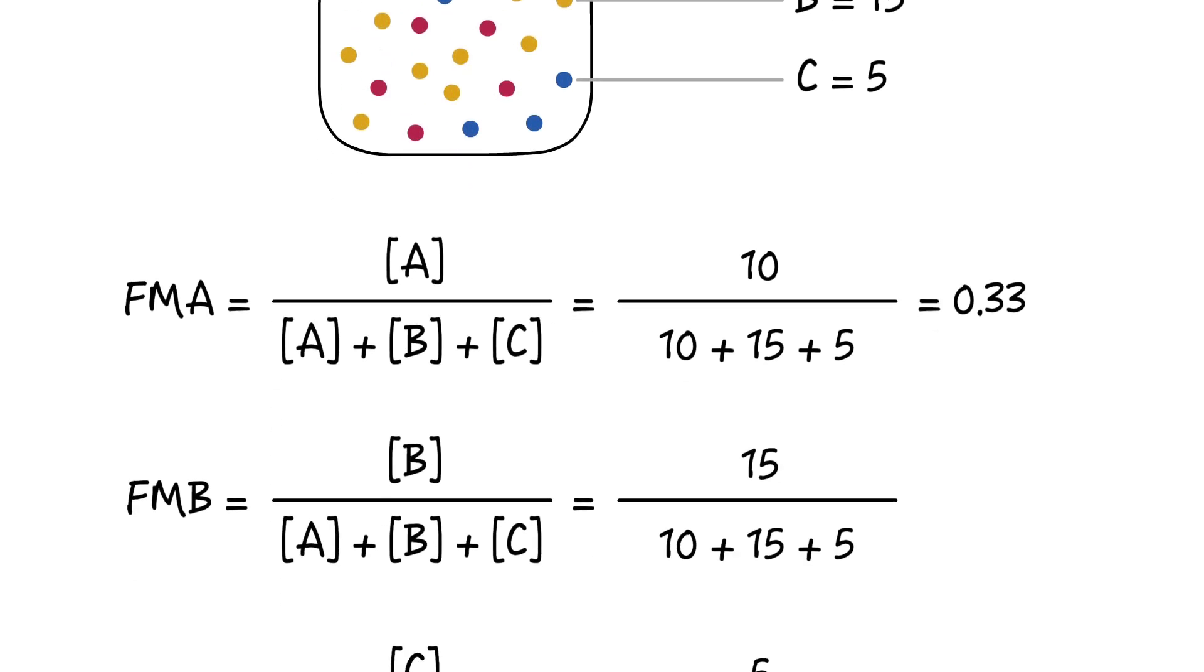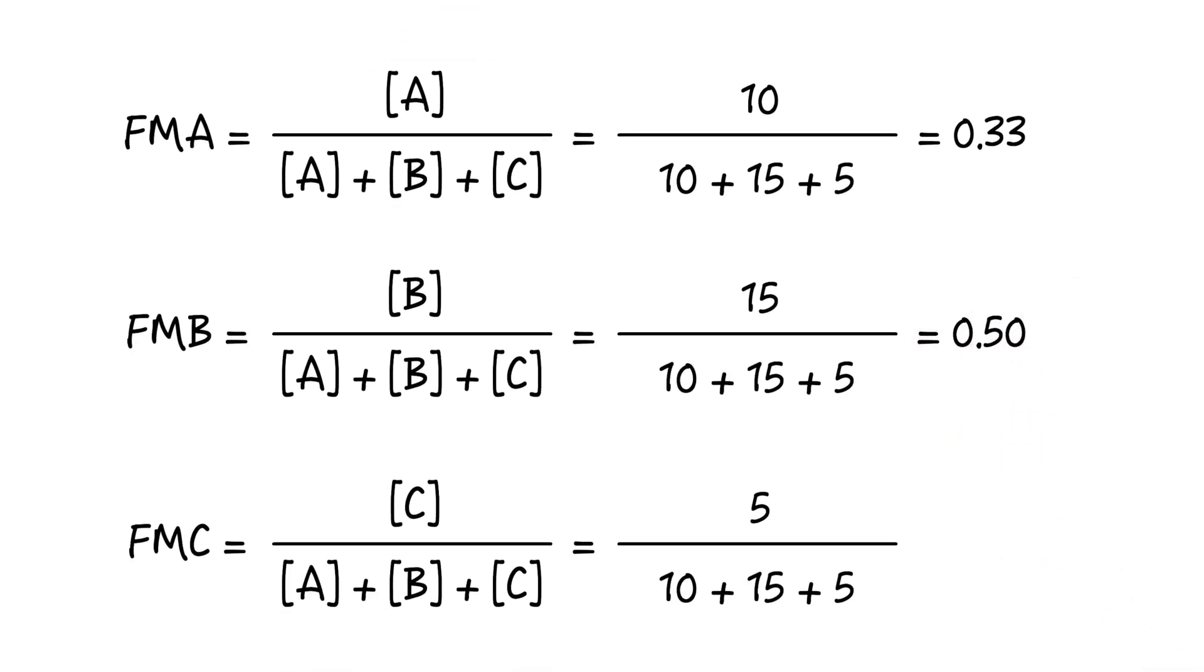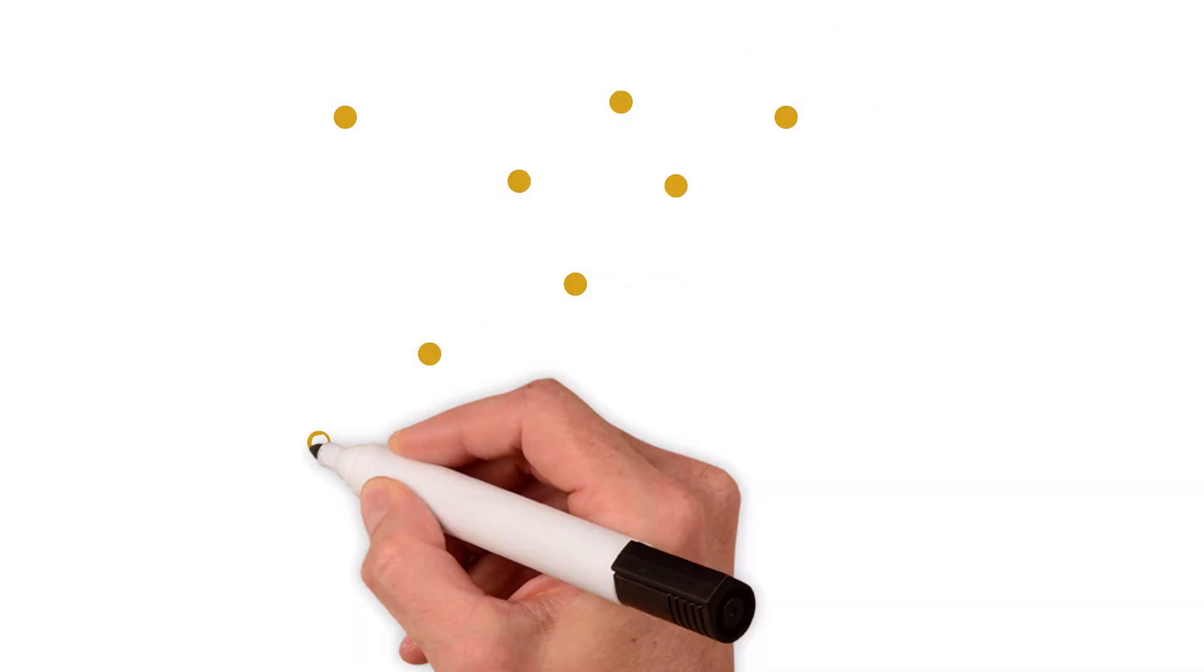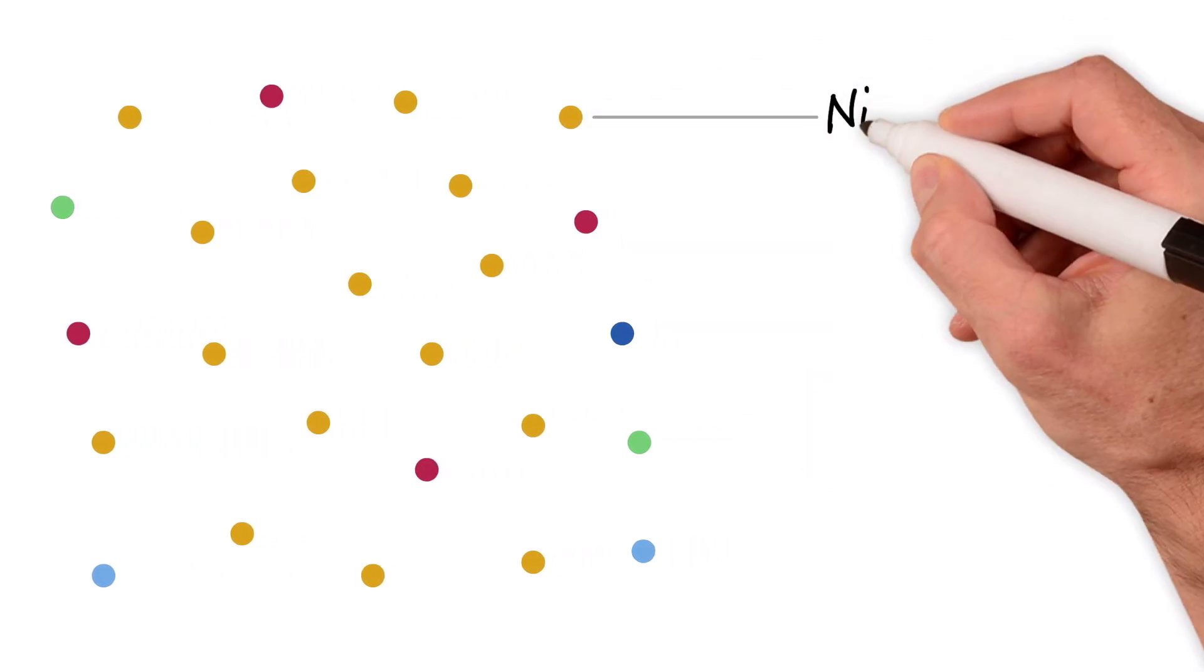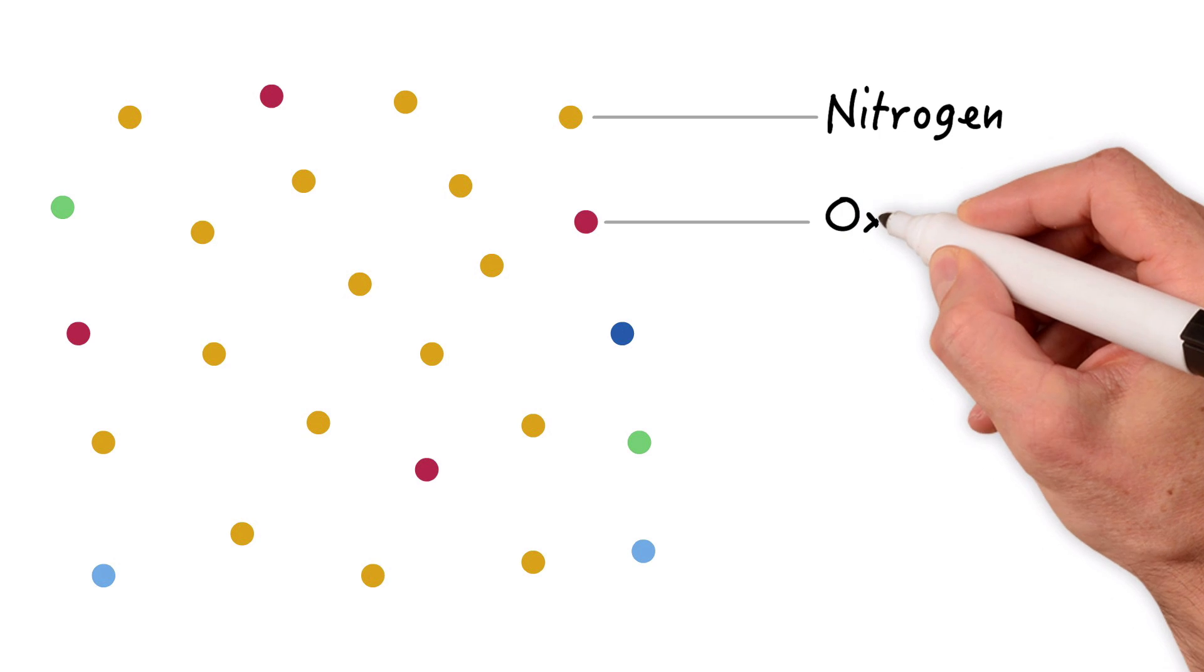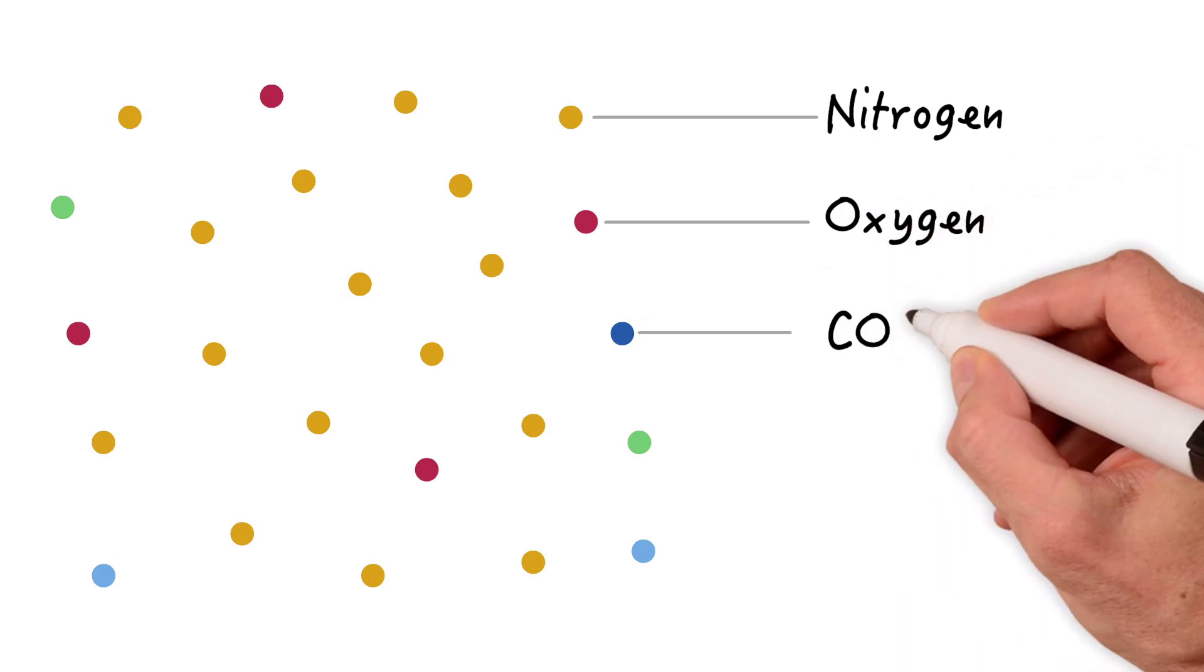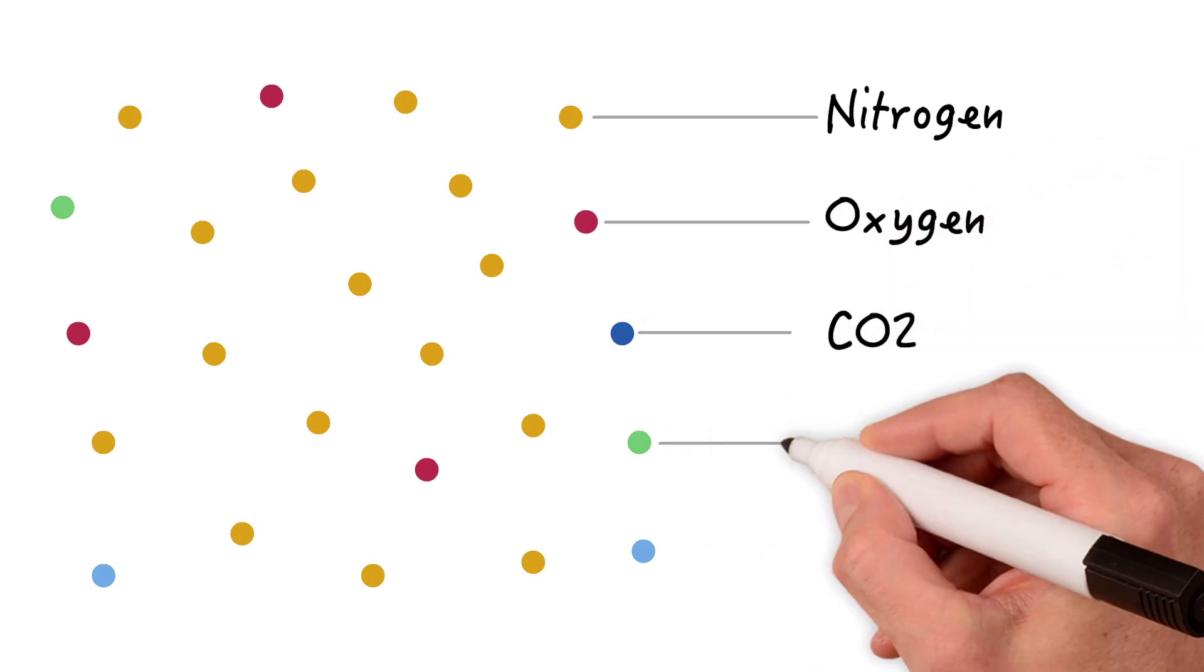You could do the same thing for gases B and C. Now let's look at something a little more practical, the air around us. This atmospheric air is also a mixture of gases: nitrogen, oxygen, carbon dioxide, argon, and water vapor.